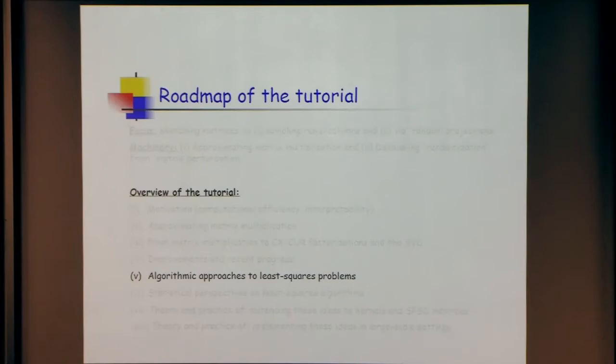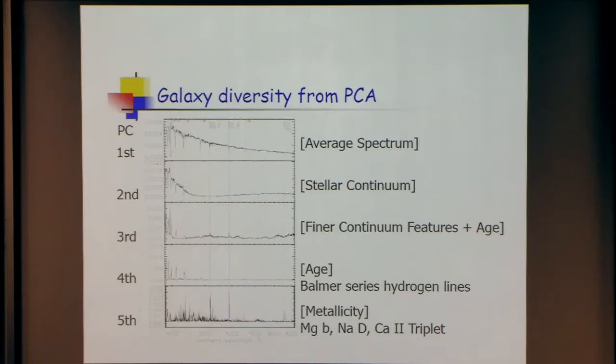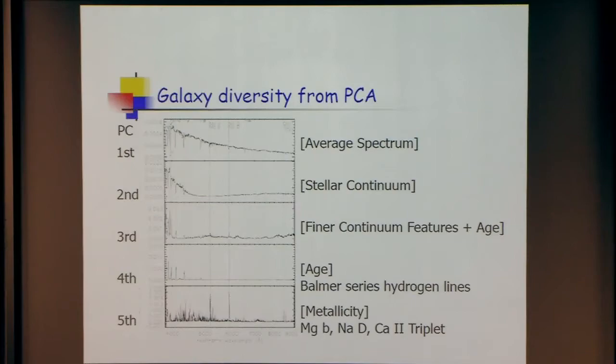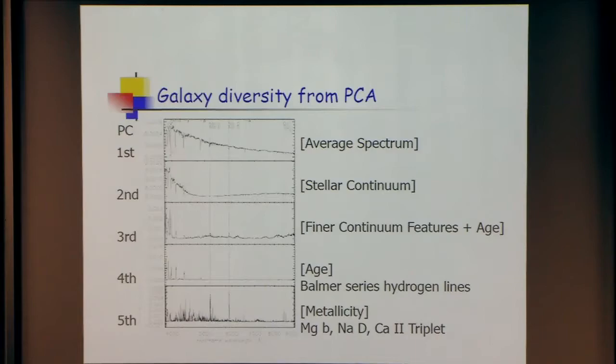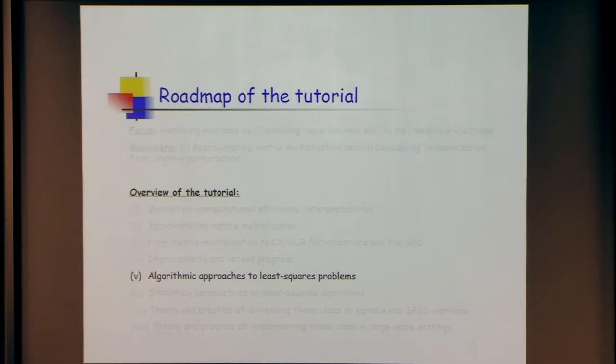A different question is: can we select informative frequencies? Because a particular frequency means a lot in terms of nuclear synthesis in stars, redshift properties, and the physics of the problem. They'll often pull out the first principal components — you get an average spectrum; the second gives stellar continuum; the third, finer continuum plus age. Beyond the first couple eigenvectors it's very hard to interpret. So let me talk about algorithmic approaches to least squares and get back to this astronomical example in a bit.